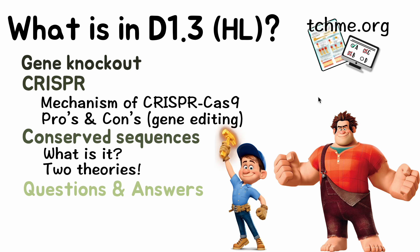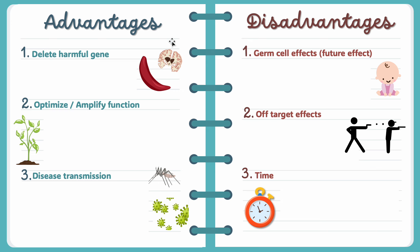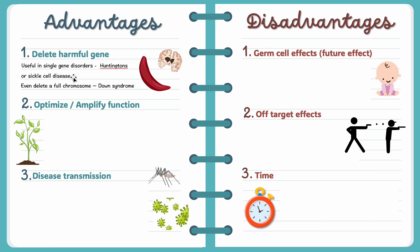Now we're going to analyze the pros and cons of gene editing, which could be asked in a long-answer question. The advantages of gene editing: number one, to delete a harmful gene. Because we can delete genes now — like sickle cell disease — we can try and fix that, have normal red blood cells that carry oxygen normally. We can prevent brains from degenerating at a young age in Huntington's disease. We can even go as far as deleting full chromosomes, like in Down syndrome.